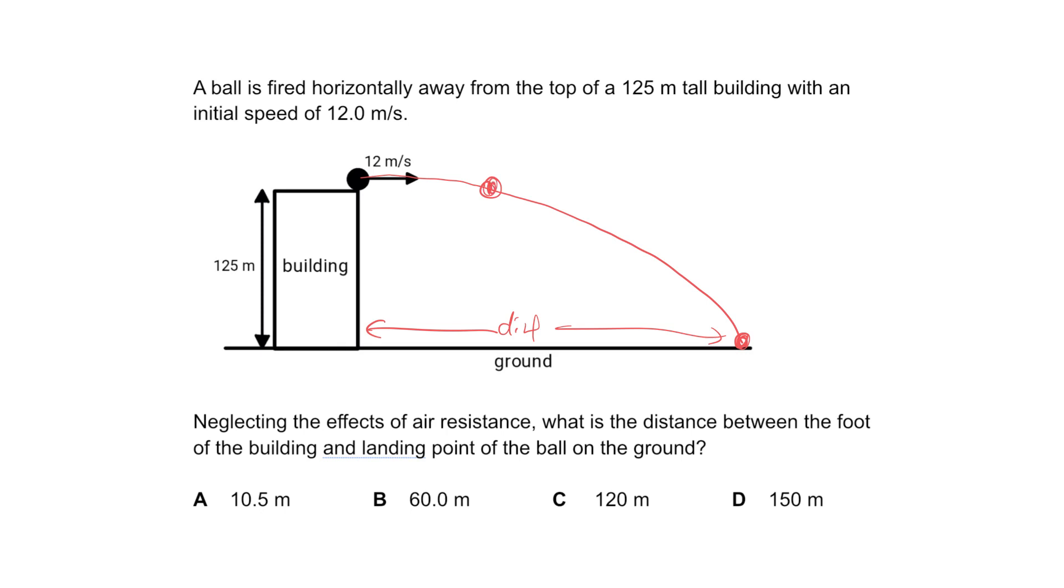If I release the ball from a height of 125 meters, the initial acceleration is 10 meters per second squared. Because air resistance is negligible, as it falls the acceleration will be constant at 10 meters per second squared.